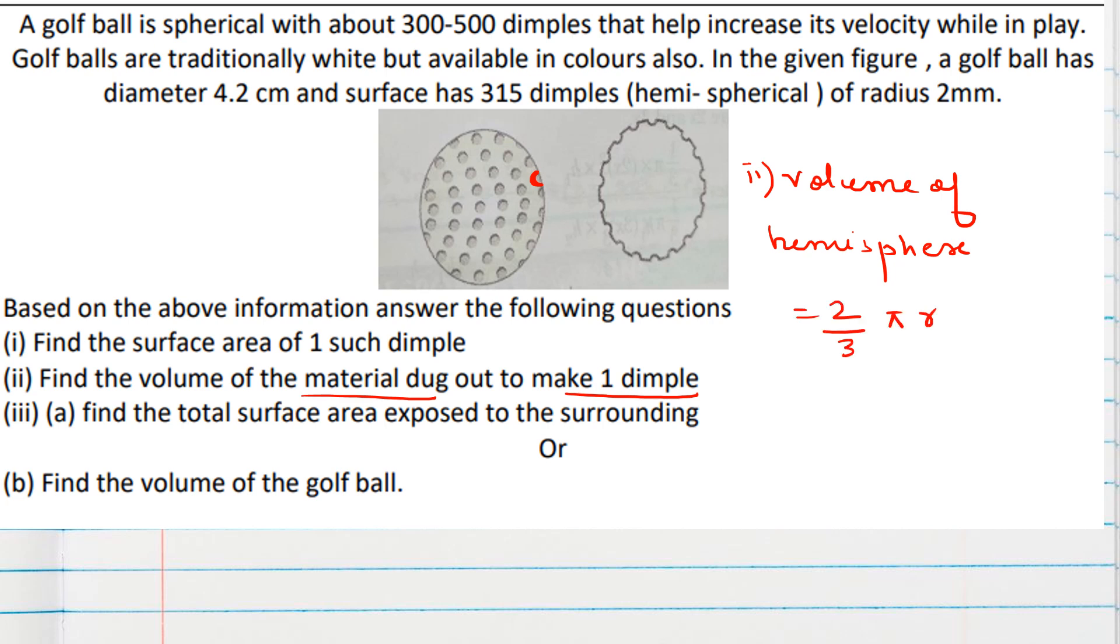Which is 2/3 πr³. So 2/3 π we will keep 22 by 7. R is given to us 2. So if you multiply again, this will be 8, 8 into 2, 16 into 22 by 3 into 7. We will check: 16 into 2 is 32, 16 into 2 is 32 and 3 is 35. We can cancel 1 by 1 from 352. We can divide from 3: 3 into 1, then 2 will remain here. 3 into 7 is 21, 1 will remain. 3 into 3 is 9.